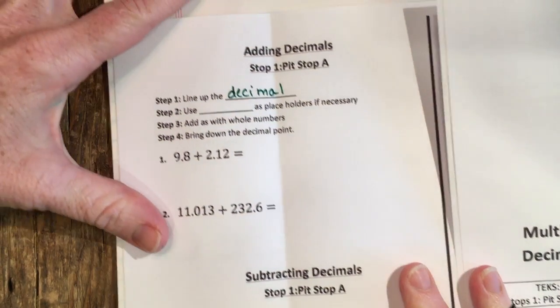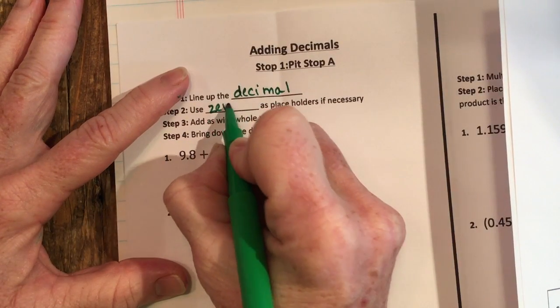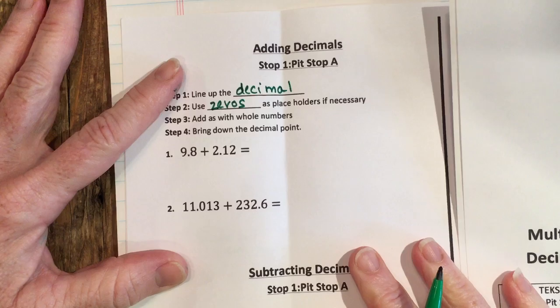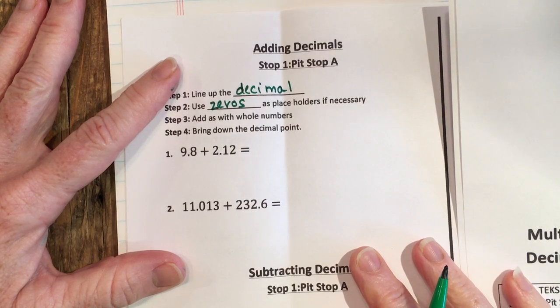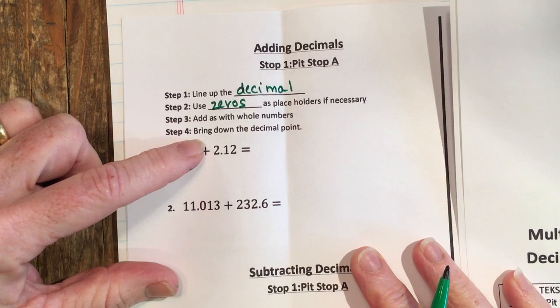Possibly that have decimals, you want to make sure that decimal is lined up and then you're going to use zeros if you need to act as placeholders. If there's any extra spaces then you'll use a zero. Then you'll add just like you would a whole number, and then the last step is to bring down the decimal point.